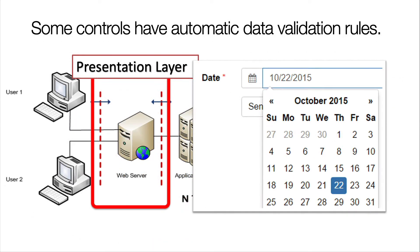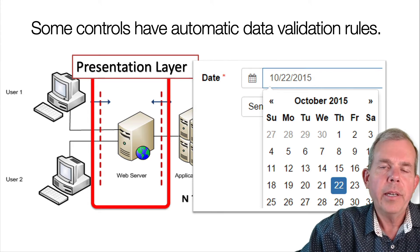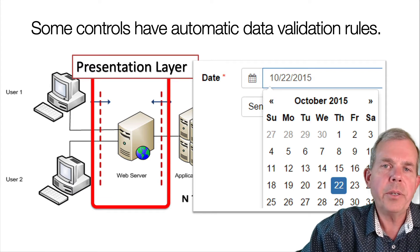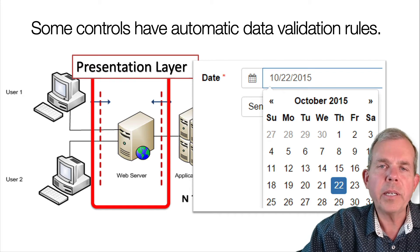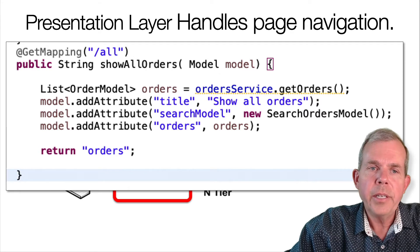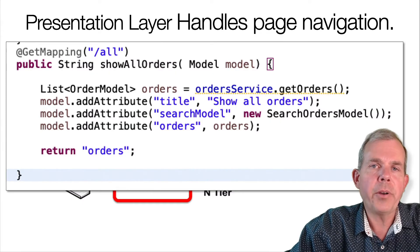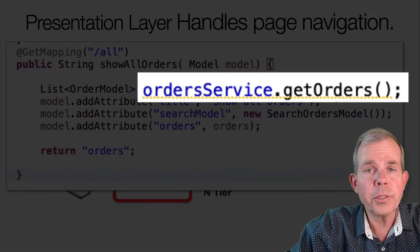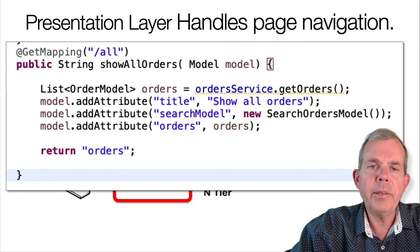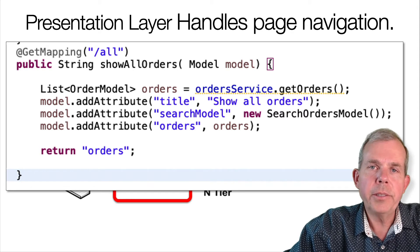Some controls you put into your web forms have automatic data validation rules. For instance, a date input only allows a valid date — you have to pick from a list. Many data input controls have filters that mask off phone numbers, zip codes, or email addresses, so data validation is sometimes done automatically depending on the controls you choose. Site navigation is also controlled in the presentation layer. Here the controller responds to a URL like /all, the event is called show all orders, it goes to an order service to get a list of all orders from the database, and then displays them on a view called orders — a template that creates a table.